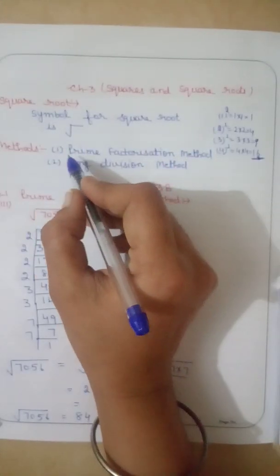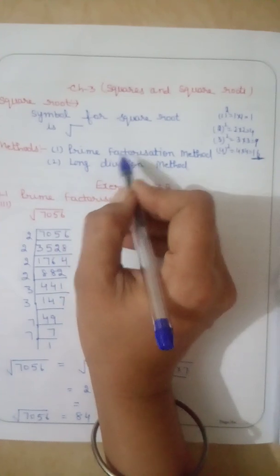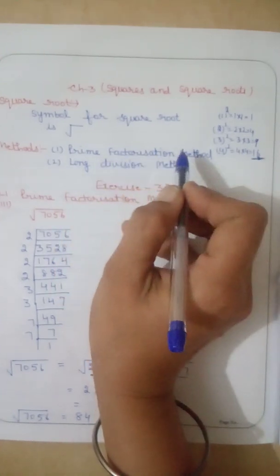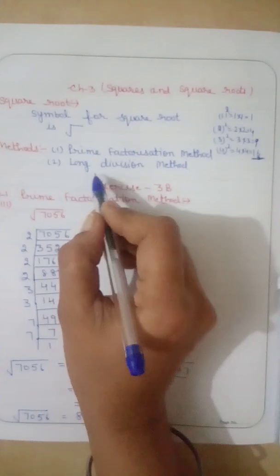We will use two methods for finding square root. First, Prime Factorization Method, and the second, Long Division Method.